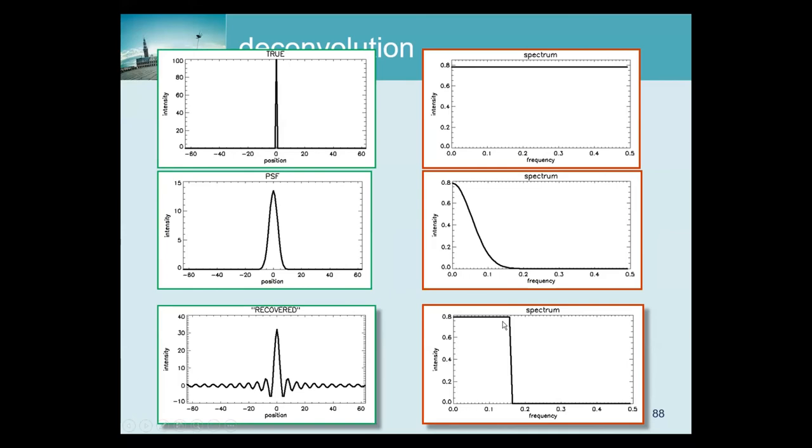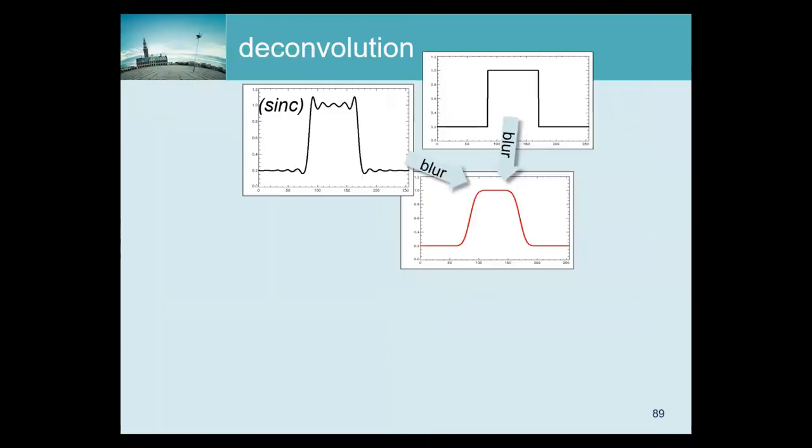So if you take the inverse Fourier transform of a block, then you get a sinc function, which is a sine divided by x. And so that sinc has wild oscillations. And if I convolve this with a block function, then I get this over and undershoot that we already observed.